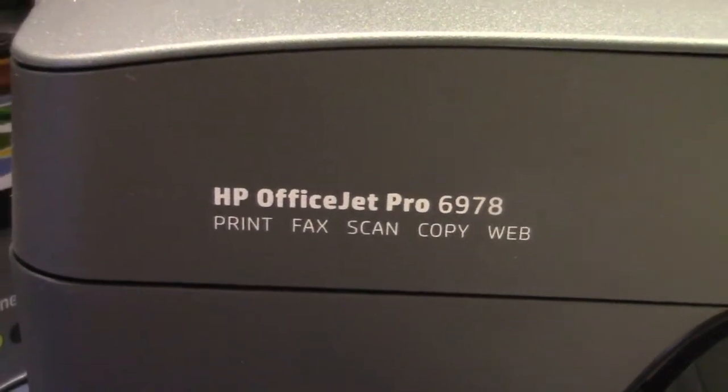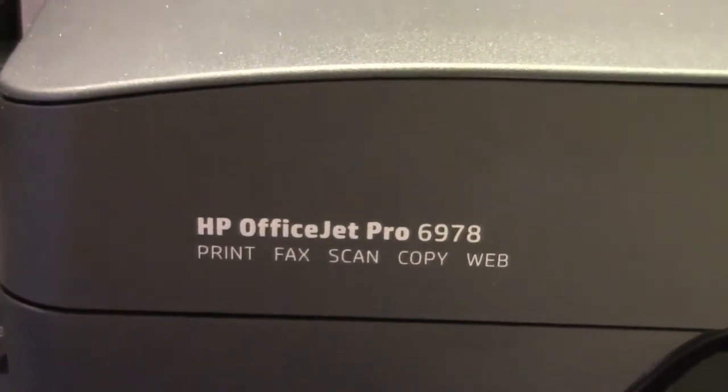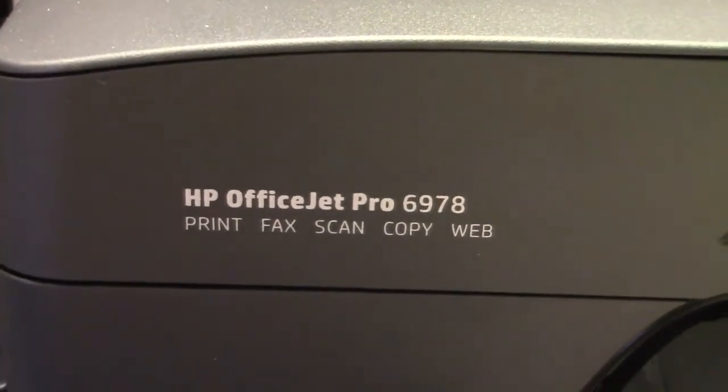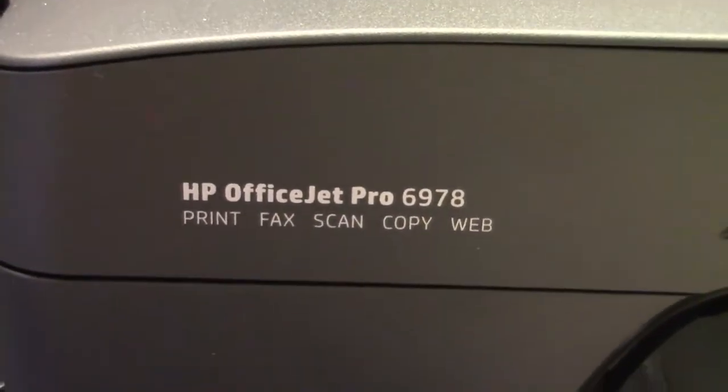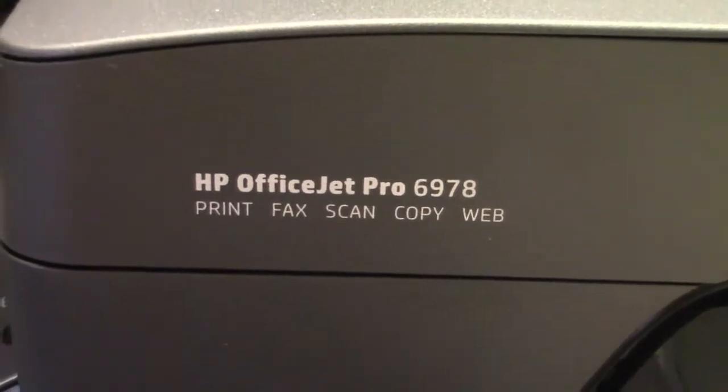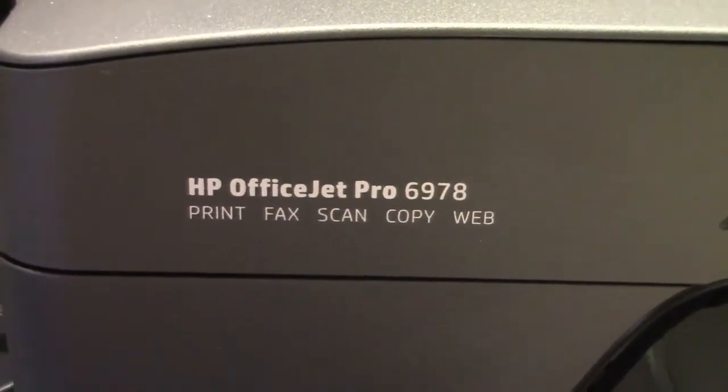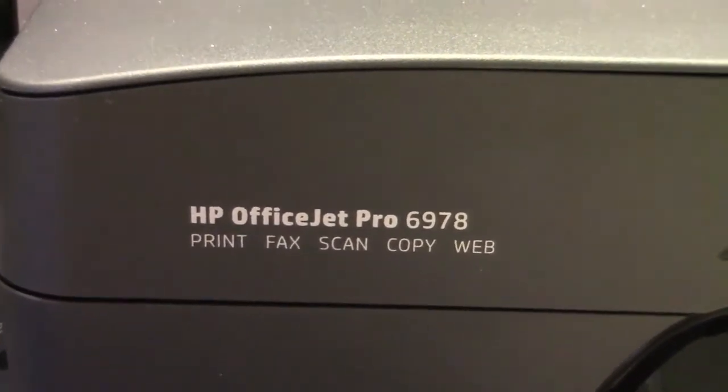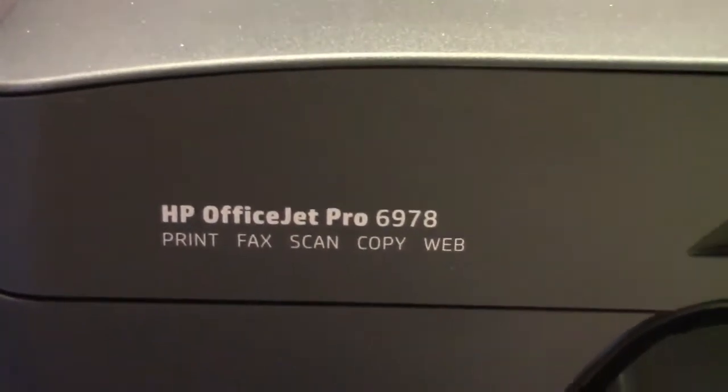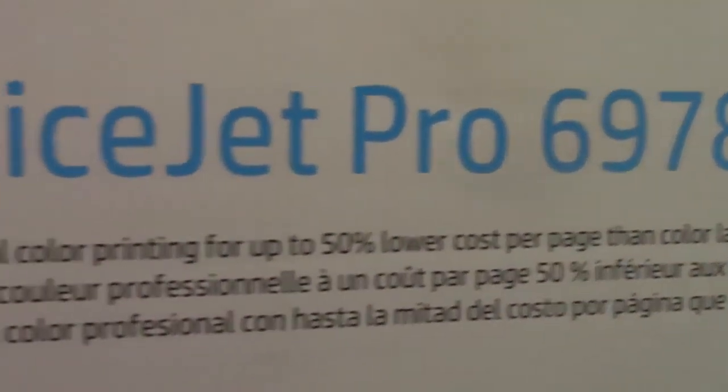Inkproducts.com will release this how-to video on how to install our CIS auto refill ink system on HP printers that use the 902 cartridges. This happens to be a 6978 OfficeJet Pro. It's brand new, I just took it out of the box and then I put the HP cartridges in it that came with it.